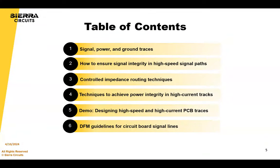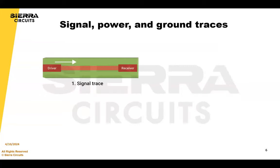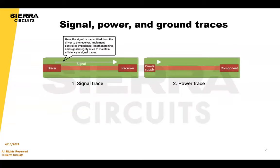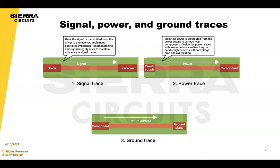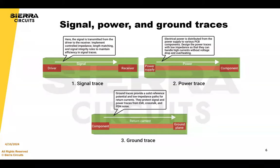Here's the table of contents — really going through signal, power, and ground traces, and some techniques. Signal, power, and ground traces all have distinct roles, and you need to understand them to plan and execute your layout strategies for your high-speed and high-current applications. To achieve the electrical performance you want, you need to optimize your trace geometries and your routing paths.